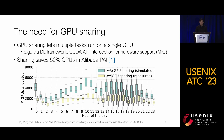Related work includes framework-level modification, CUDA API interception, and hardware methods like NVIDIA MIG for certain GPU types. As illustrated in the figure, the yellow bars represent measured GPU allocation, while the green bars are simulated results showing that workloads could have utilized twice as many GPUs without sharing.